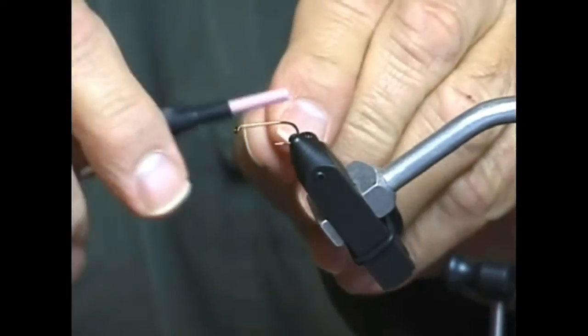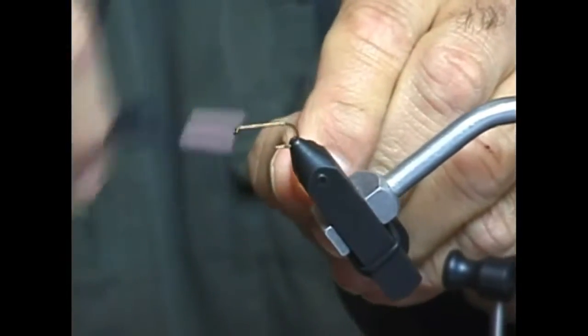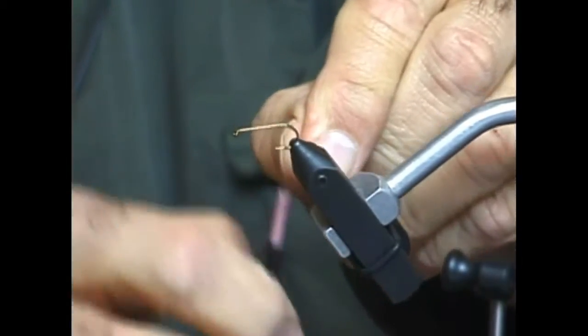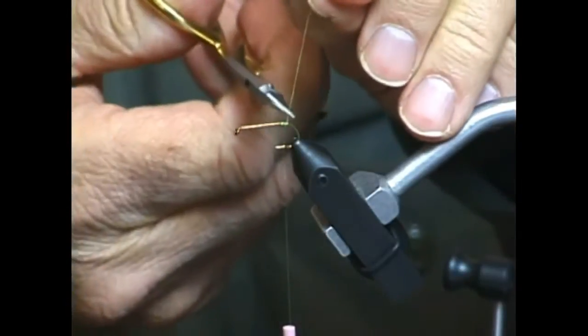Then I'm going to mount the thread using a jam knot, simple jam knot. Wrap the thread one way, wrap the thread back over itself and our thread is locked in. I'm going to clip out the waste thread like this.